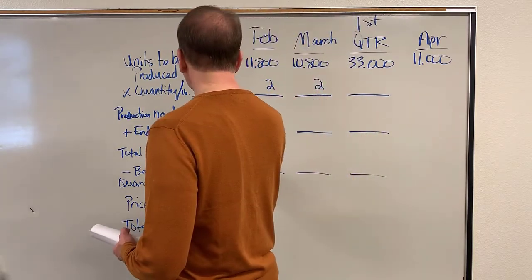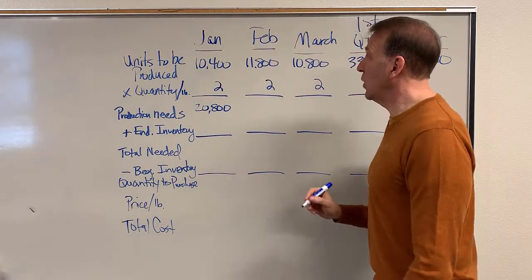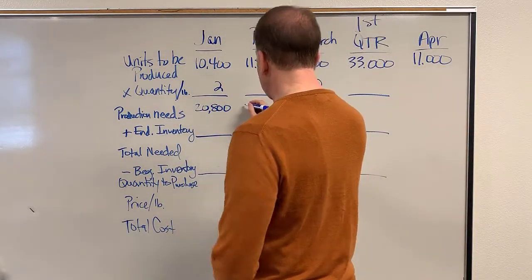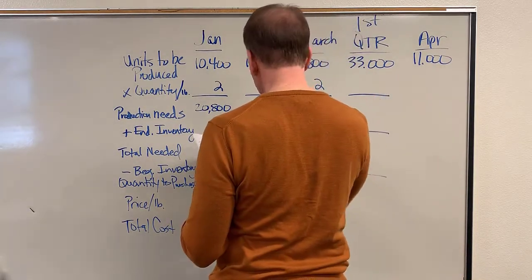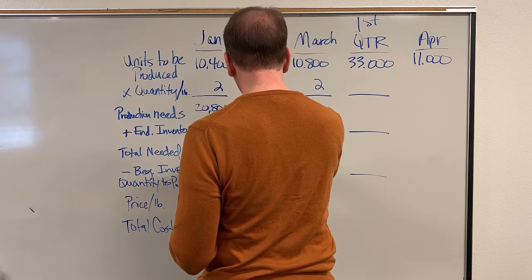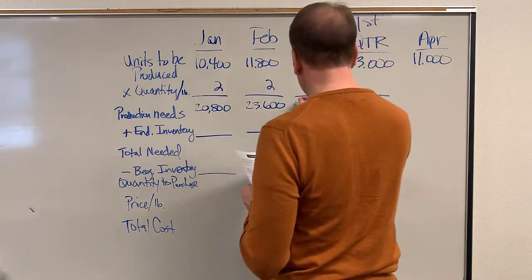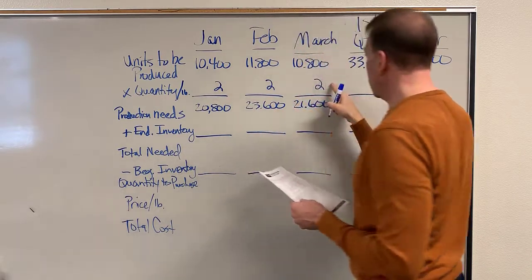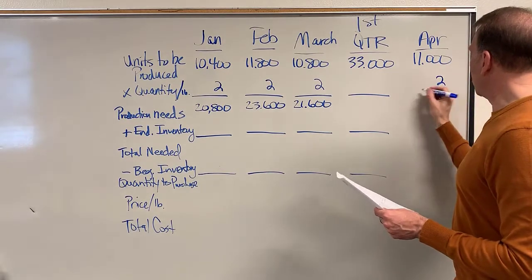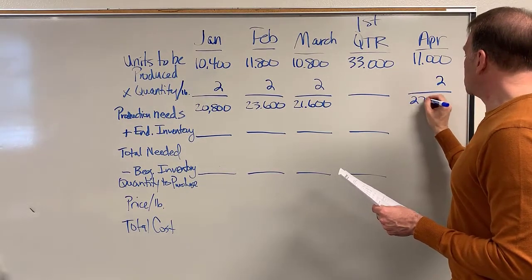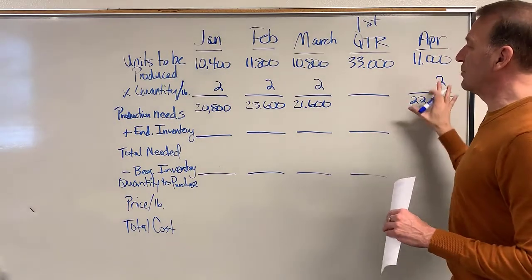That gets us 20,800 pounds of potatoes in January, 23,600 in February, and 21,600 in March. And then for April, two times 11,000 gives us 22,000 pounds.